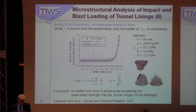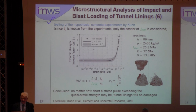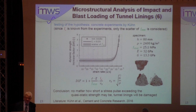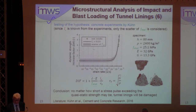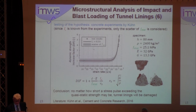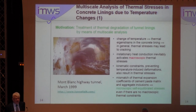The hypothesis was tested by re-analyzing concrete experiments by Kuhn. Since L_c is known from the experiments — taking a look at the right lower figure, L_c is approximately H over 2 — only the scatter of f-static is considered. The diagram shows that the model agrees quite well with the test results, and also that the scatter of the static strength decreases with increasing strain rate. The conclusion is that no matter how short a stress pulse exceeding the quasi-static strength may be, tunnel linings will be damaged.